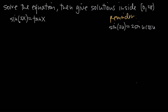The problem we've been given is sine of 2x equal to tangent of x. In order to solve this, we want to start with the double angle formula, which tells us that sine of 2u is equal to 2 sine of u cosine of u. Notice that in our problem, we have one trigonometric function with an argument of 2x and the other with an argument of x. So we need to get both of them in terms of just x, and that's why we bring in the double angle formula.